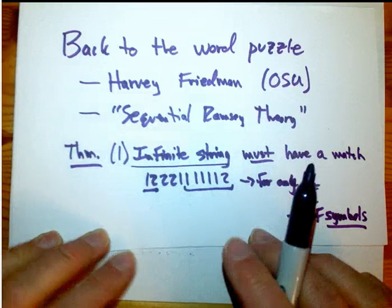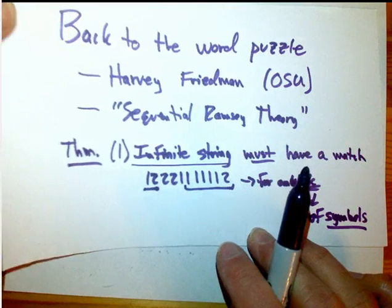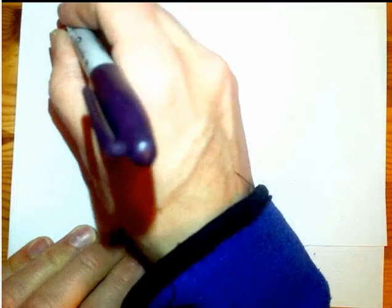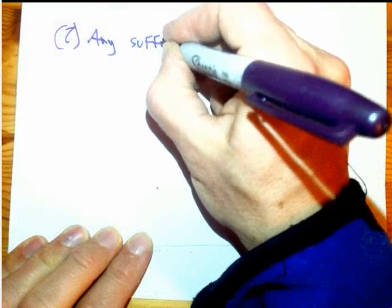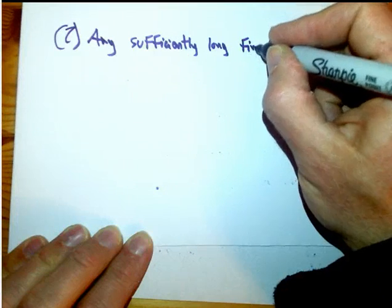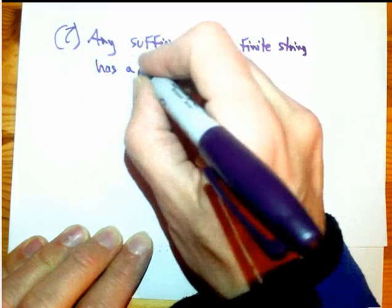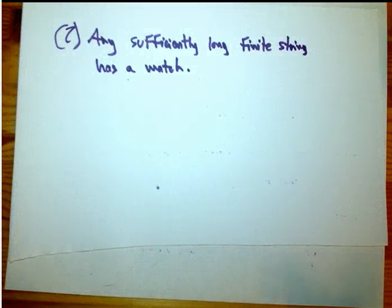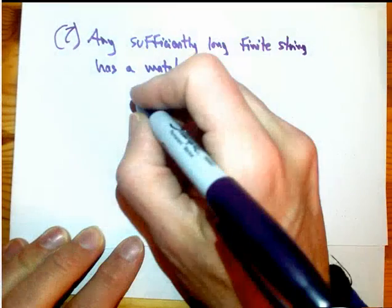You can first show it for an infinite string. And for many of these problems, that can be made to imply, too, that any sufficiently long finite string has a match. That's more directly what I've been talking about with Ramsey theory — that you don't have to go all the way to the infinite string to guarantee a match. As you build the string out more and more, eventually you'll find a match.